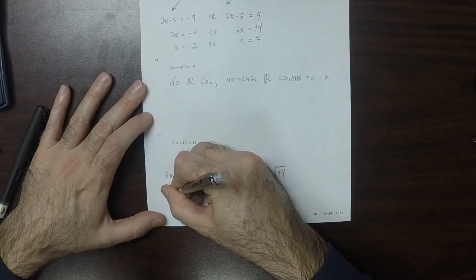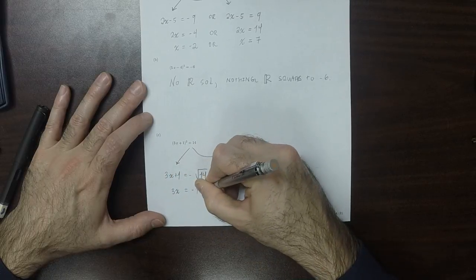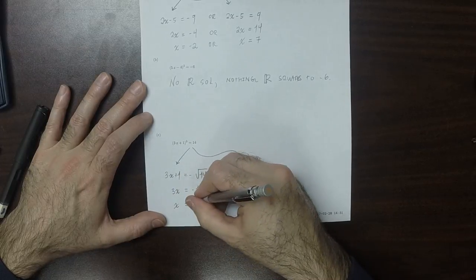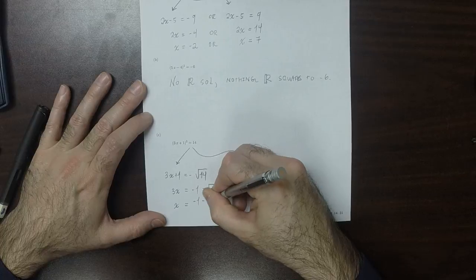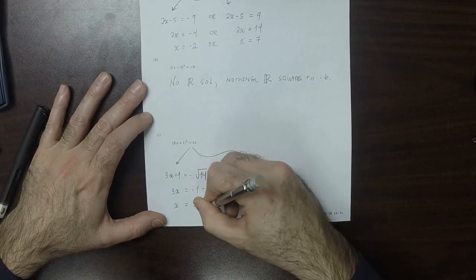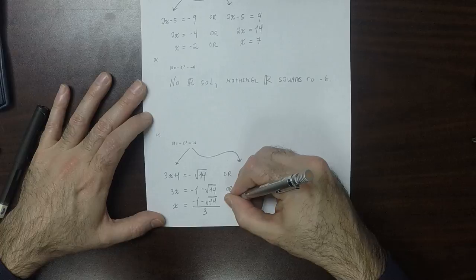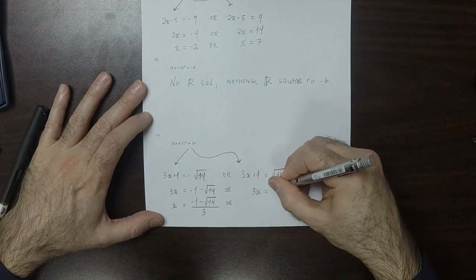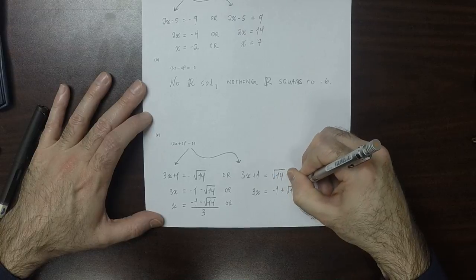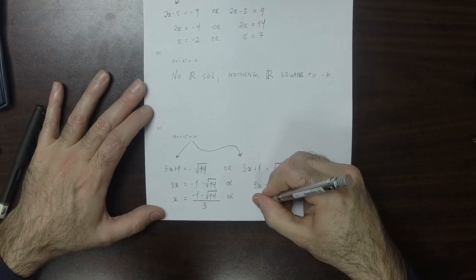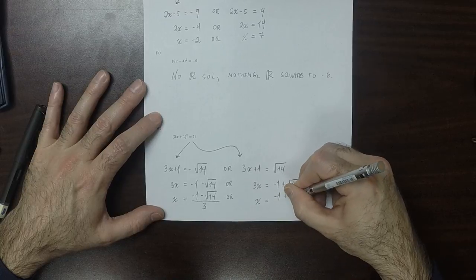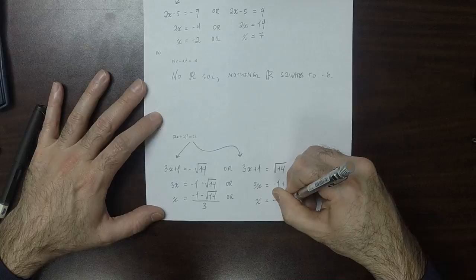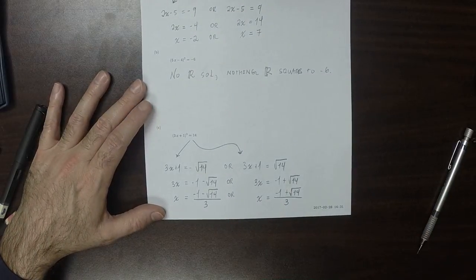So 3x is negative 1 minus the square root of 14, so x is negative 1 minus the square root of 14 over 3, or 3x is negative 1 plus the square root of 14 over 3. And that's the answer.